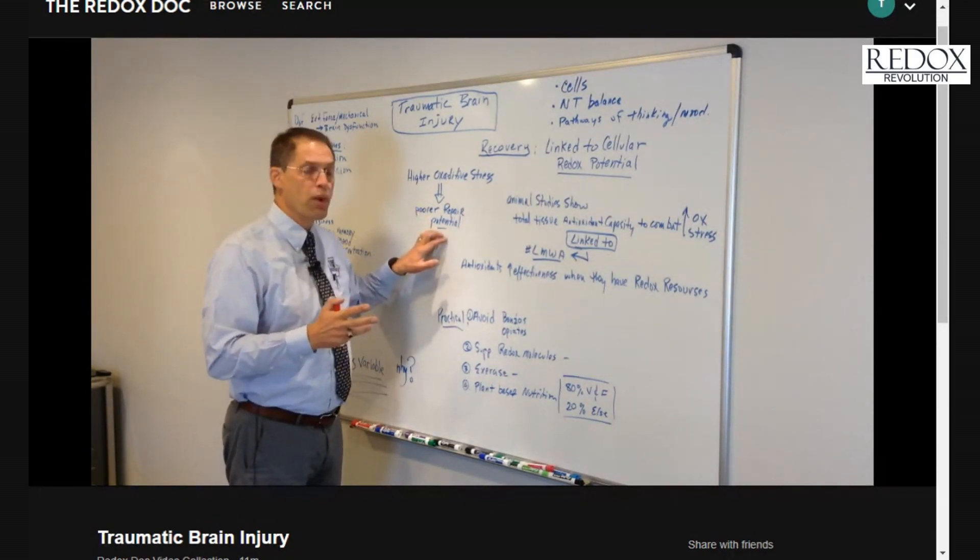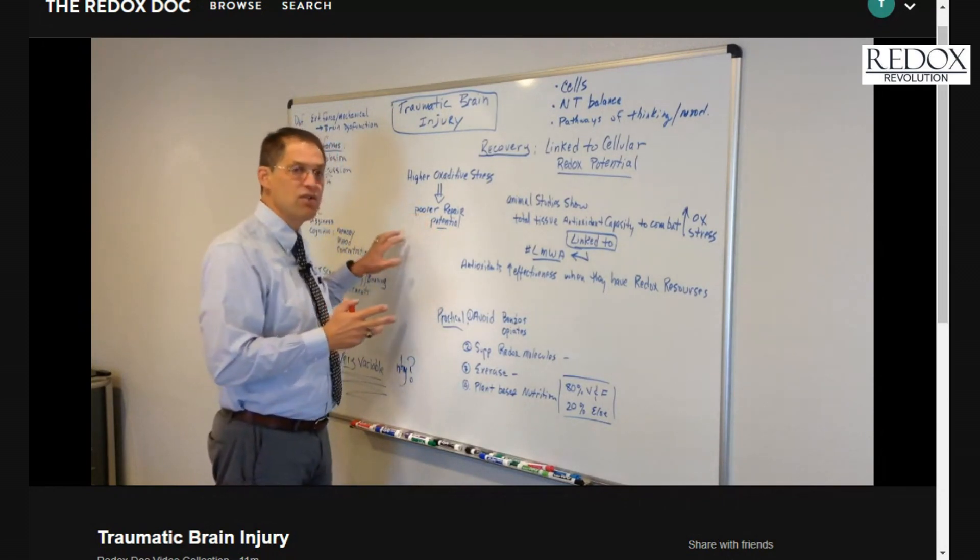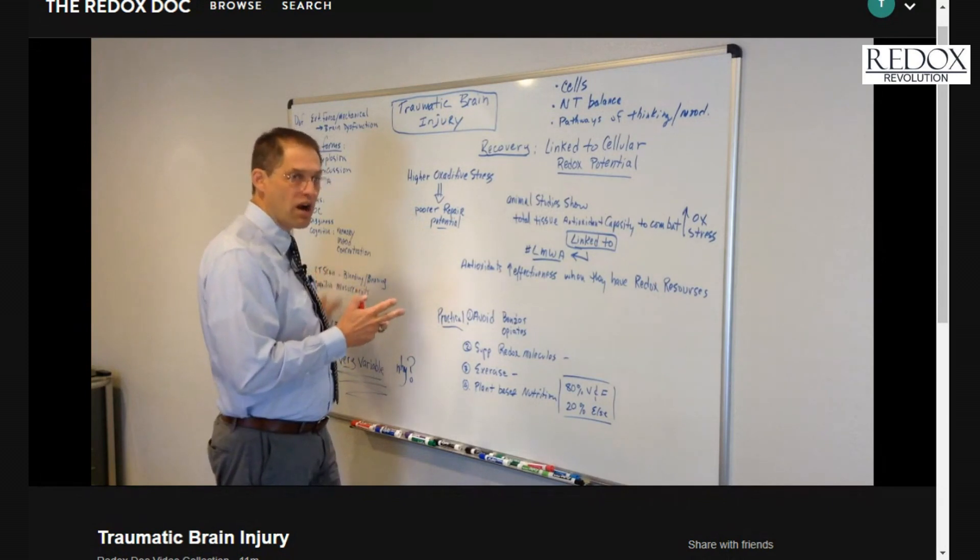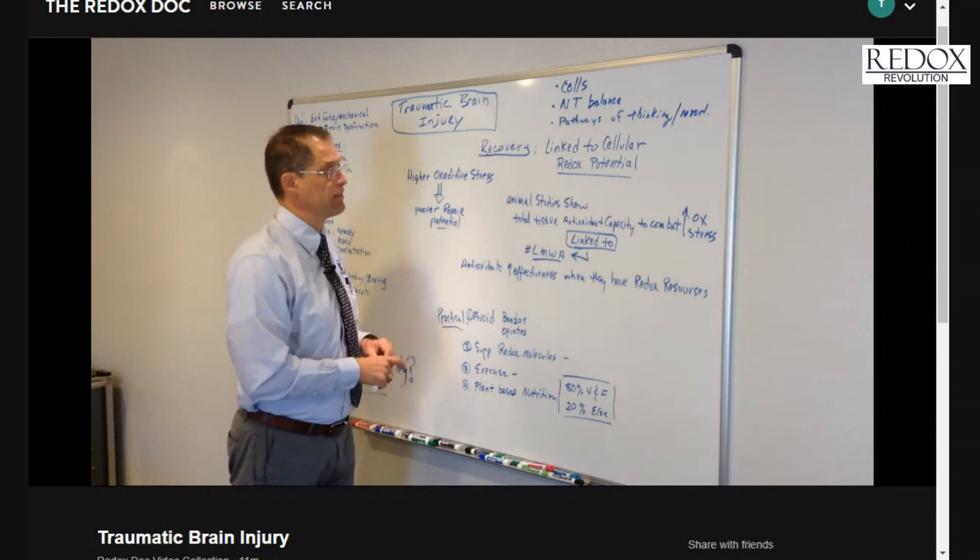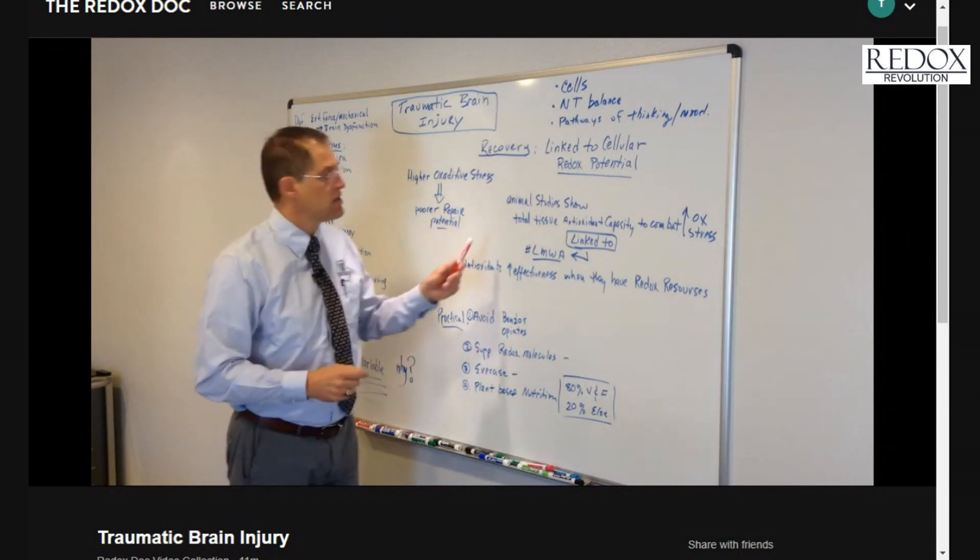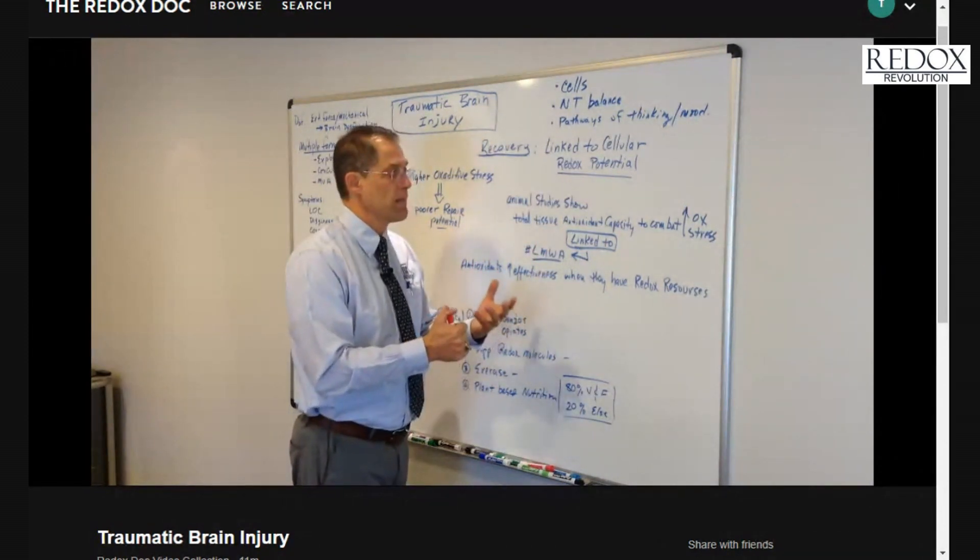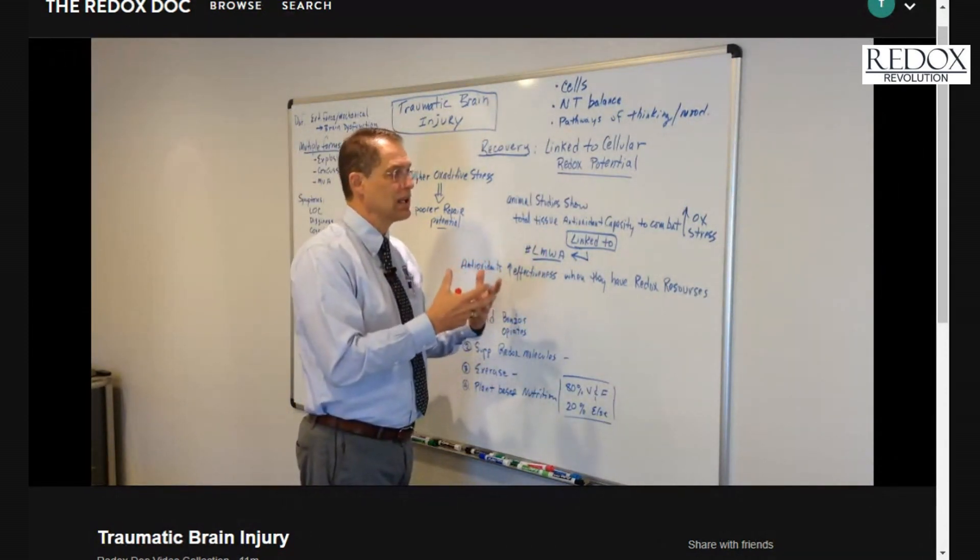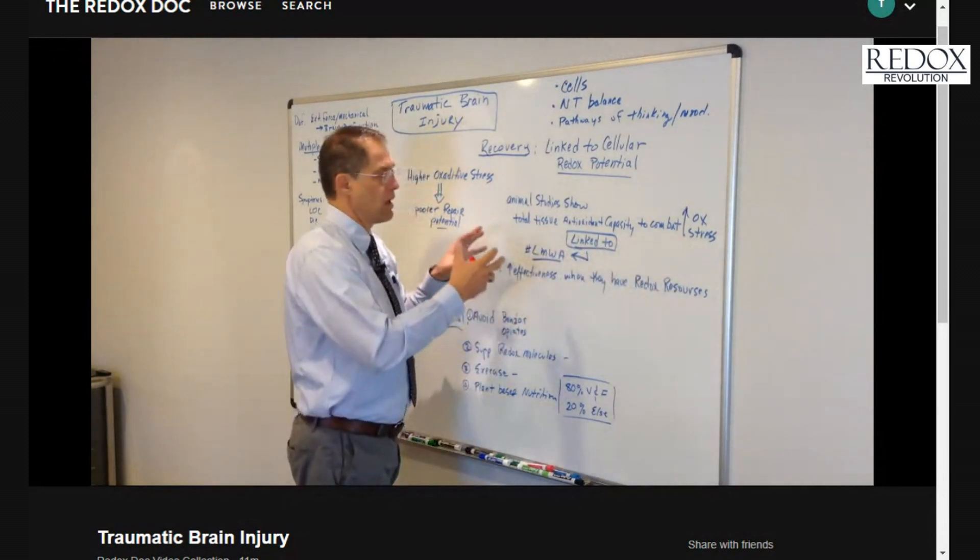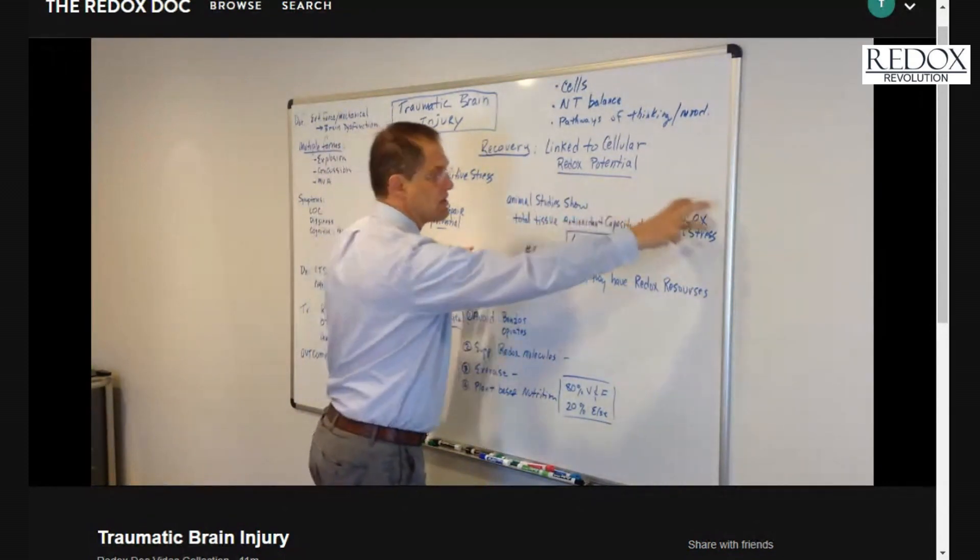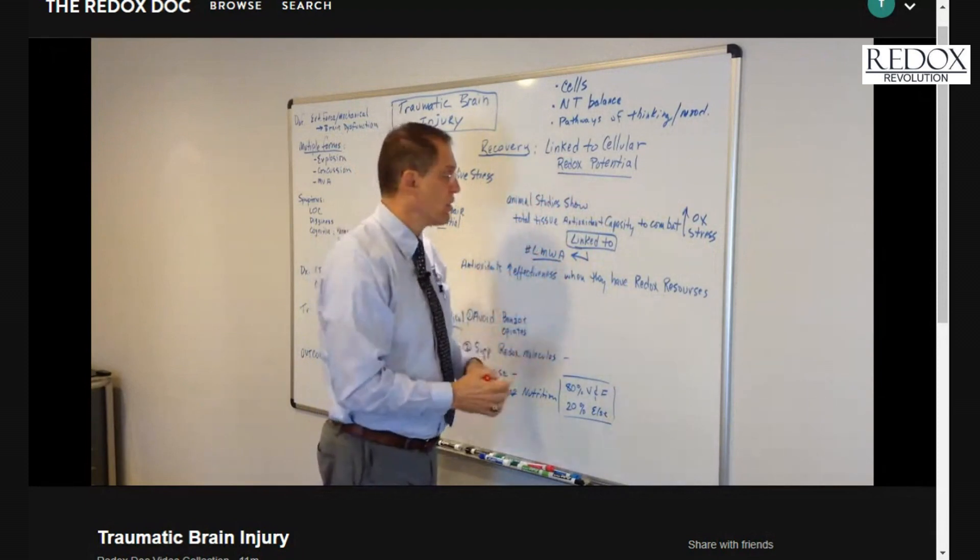And so if your oxidative stress is higher, your repair potential is poorer, and that makes you more at risk for a slow and arduous or a terrible recovery process with a traumatic brain injury. So animal studies have shown that the total tissue antioxidant capacity is dramatically linked to oxidative stress. So our capacity to contend with oxidative stress is linked to how many antioxidants we have and how well they can do their work.